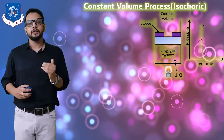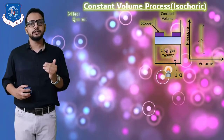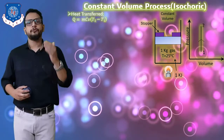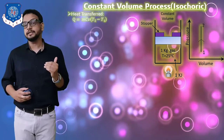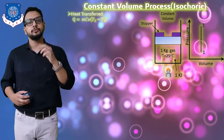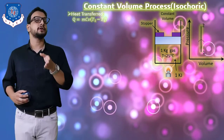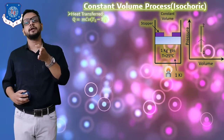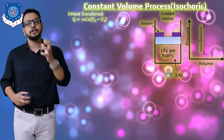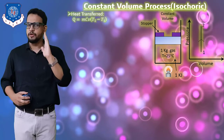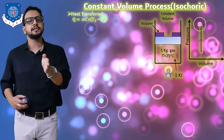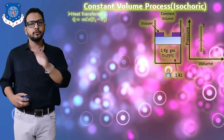Let's begin with the first: how much heat transfer we can obtain during this constant volume process. We know the general formula of heat transfer that is Q = mc∆T. Since heat is supplied at constant volume, we take specific heat capacity at constant volume, so the equation becomes Q = mcv(T2 - T1), where m is the mass of the gas, T2 is the final temperature, and T1 is the initial temperature.